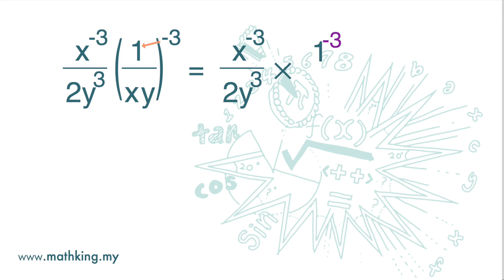1 to the power of negative 3 is 1. Why is that so? 1 to the power of negative 3 is 1 over 1 to the power of 3. 1 to the power of 3 is 1. So 1 over 1 is 1.